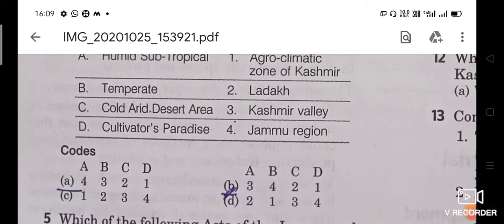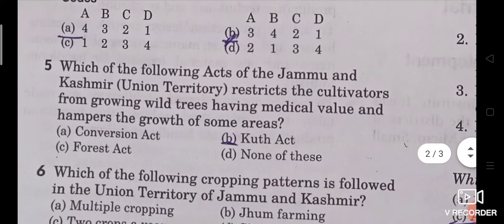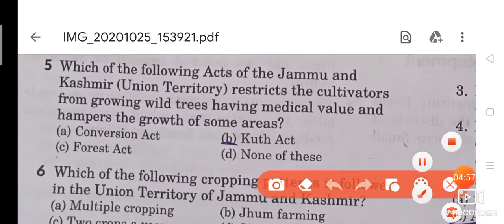Question 5: Which of the following acts of the Jammu and Kashmir union territory restricts the cultivators from growing wild trees having medical value and hampers the growth of some areas? The answer is Option B, that is the Kut Act. The Kut Act is the right answer.